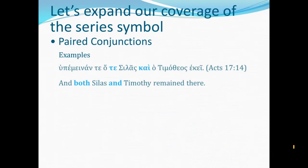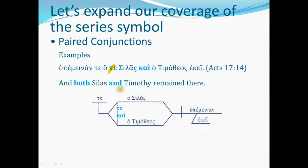Another example from Acts: 'And both Silas and Timothy remained there.' Here the construction uses te instead of kai in the first conjunction position, but it's the same construction. The first te here opens the clause; the second te corresponds to the top line of the conjunction space, and the kai corresponds to the second conjunction. So we have a series of two subjects: both Silas and Timothy remained there.